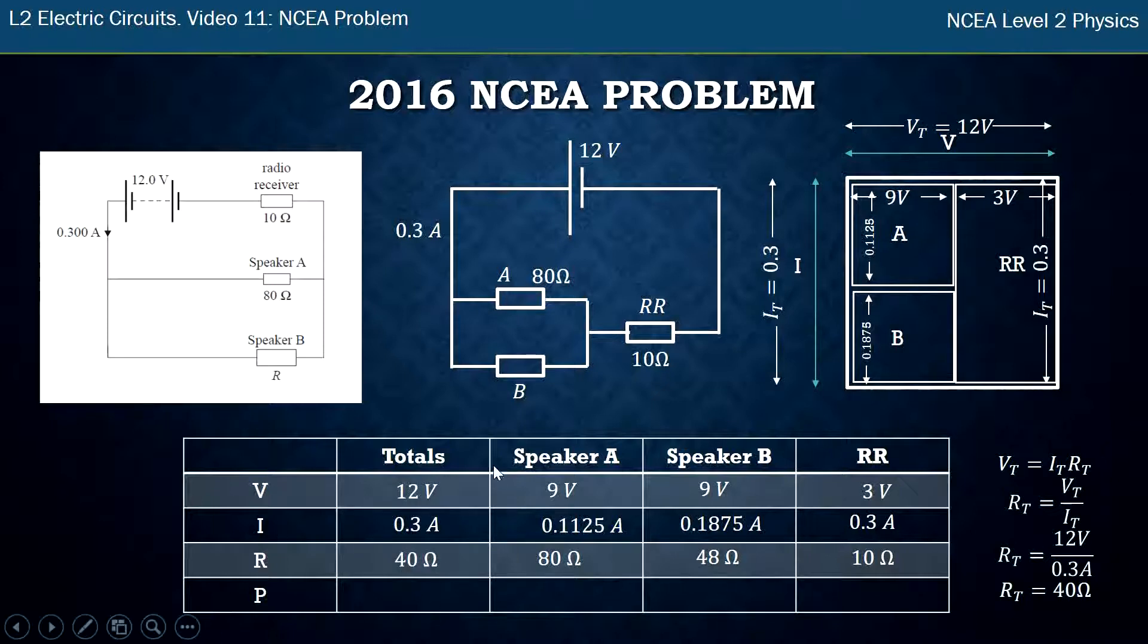Now that I've got three in the column, I can, well I only needed two, I can work out the power. So power is just VI and I can just do it for everyone. I'll make sure I use the right value. So for speaker A I'll use the 9 volts and the 0.11. Do that and I get that value. Speaker B I get this value. And again I'll use the same formula but with different values. For the radio receiver three times 0.3 is 0.9.